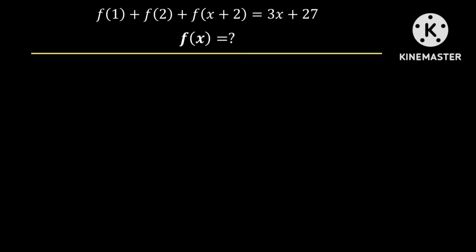Hello guys, you are once more welcome to this channel. Today we have another functional equation. We are given the function f such that f of 1 plus f of 2 plus f of x plus 2 is equal to 3x plus 27. And we need to find f of x.